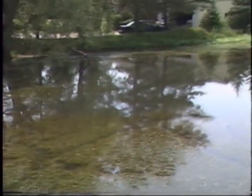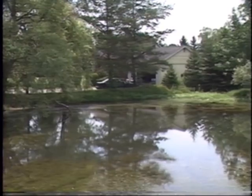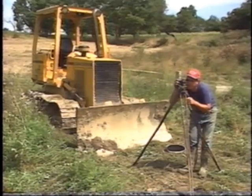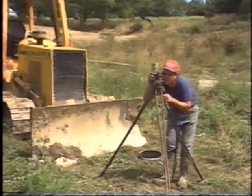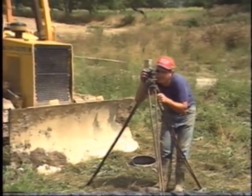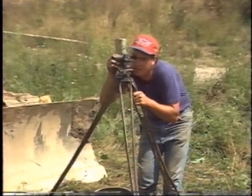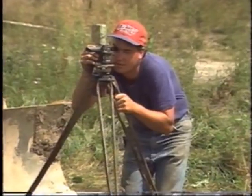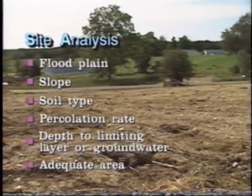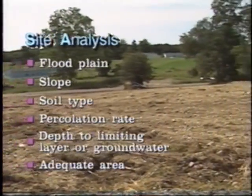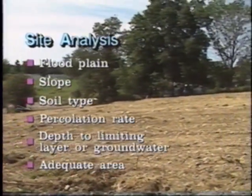Because soil with good drainage and aeration is an essential part of a household septic system, the state of New York requires a site analysis. This includes assessing floodplain boundaries, slope, soil type and percolation rate, and soil depth to the limiting layer or groundwater.